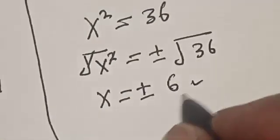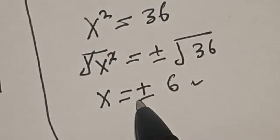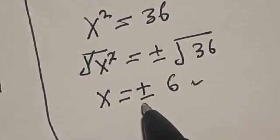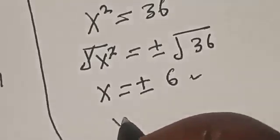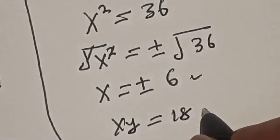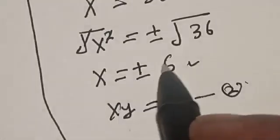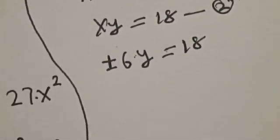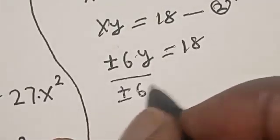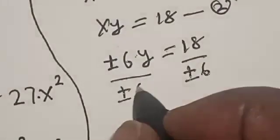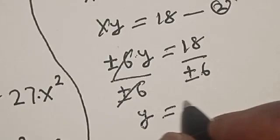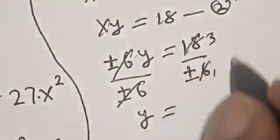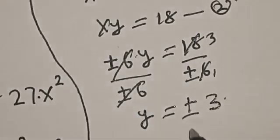Now that we know x equals plus or minus 6, let's substitute into equation 2 to get the value of y. Equation 2 gives us xy equals 18. Substituting x equals plus or minus 6, we have plus or minus 6 times y equals 18. Dividing both sides by plus or minus 6, y equals 18 divided by 6, which gives y equals plus or minus 3.